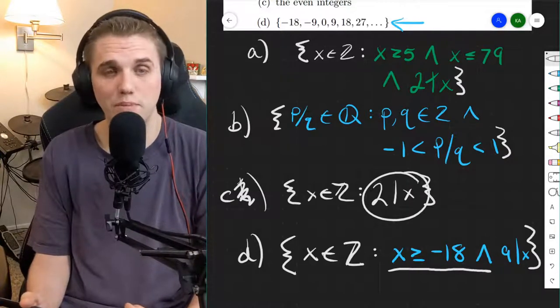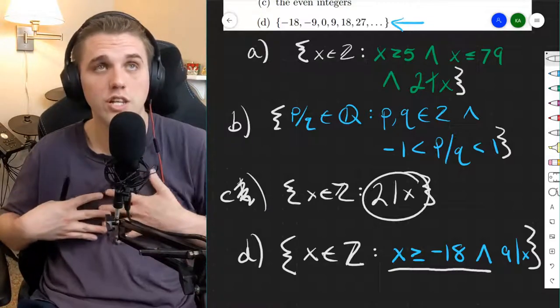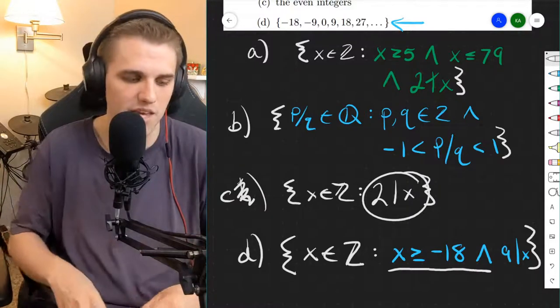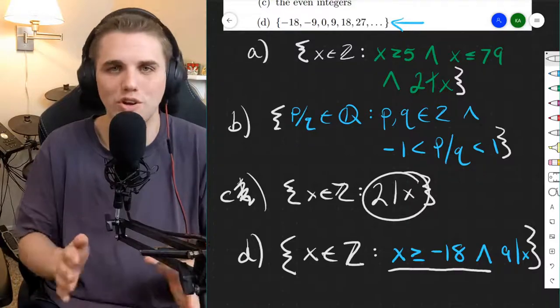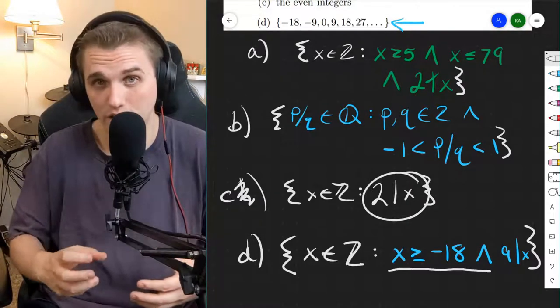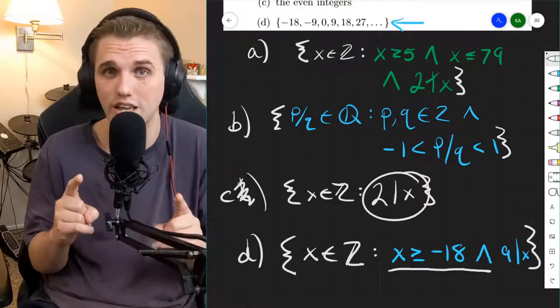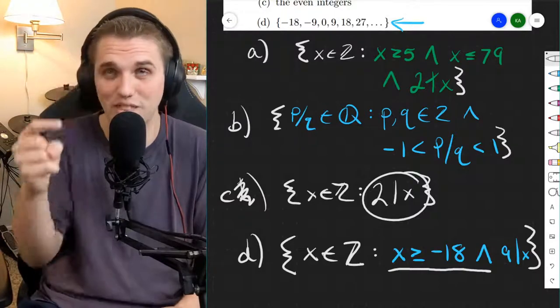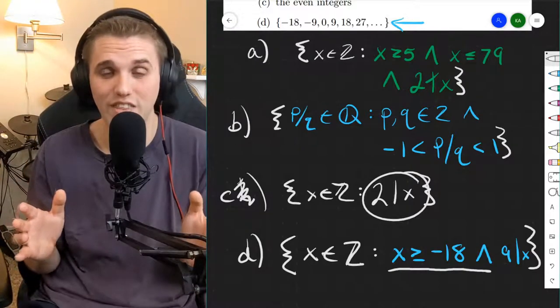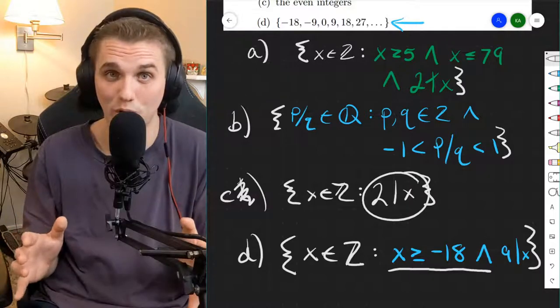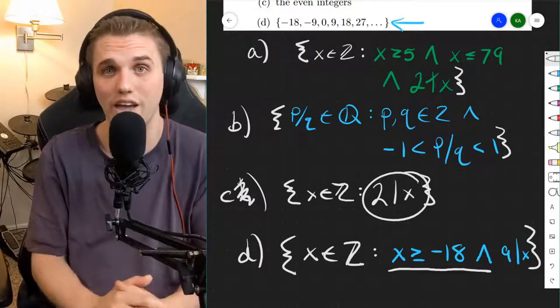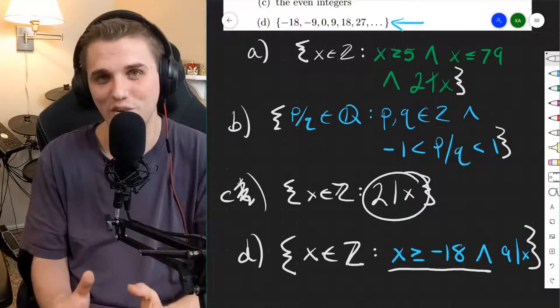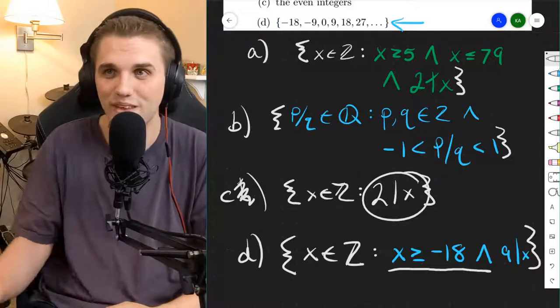And that's how we use set builder notation. I personally think set builder notation is a lot easier than what a lot of professors make them out to be. But that's so long as you understand the difference between restricted comprehension and unrestricted comprehension. There is a really good video to watch about naive set theory. It's a great video to watch, and this video will help you understand set builder notation a lot more if you're still confused as to why I did this the way I did. If you have any questions, I'll see you all in the comments section. Thanks, everyone. And I'll see you all in the next video. Bye-bye.